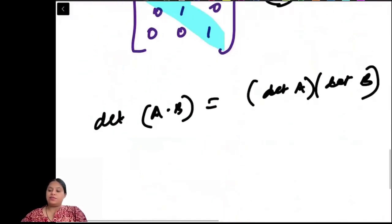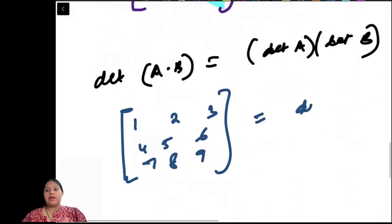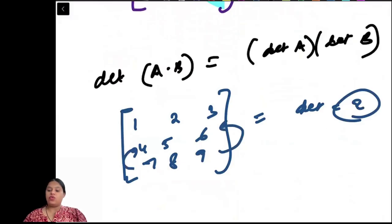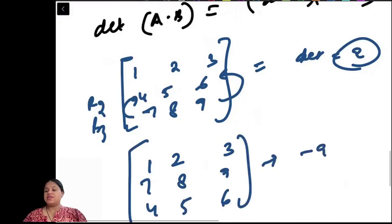For example, if you have a matrix with entries 1, 2, 3, 4, 5, 6, 7, 8, 9, and it has determinant A, if you swap row 2 and row 3 to create a new matrix 1, 2, 3, 7, 8, 9, 4, 5, 6, the determinant will be minus A.